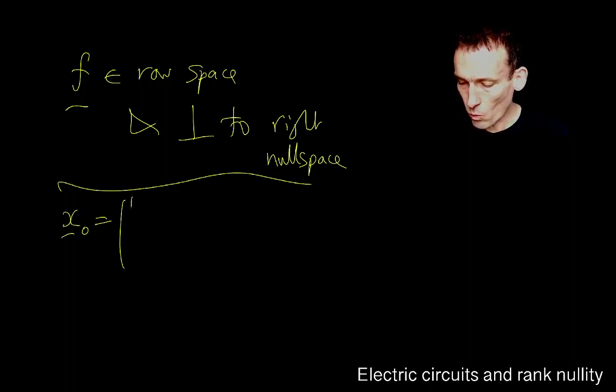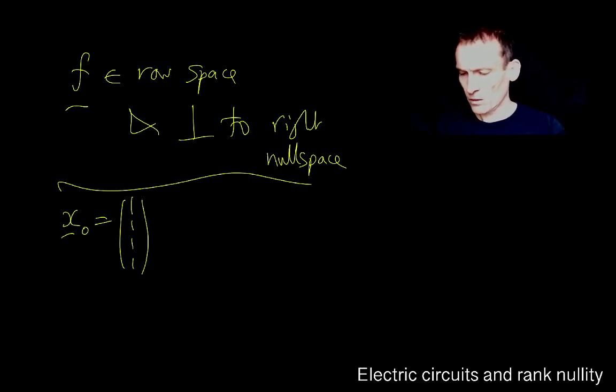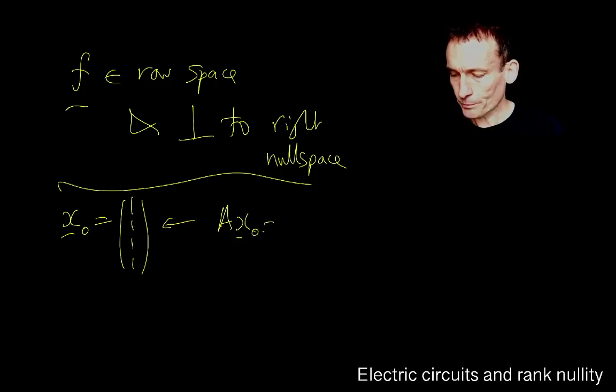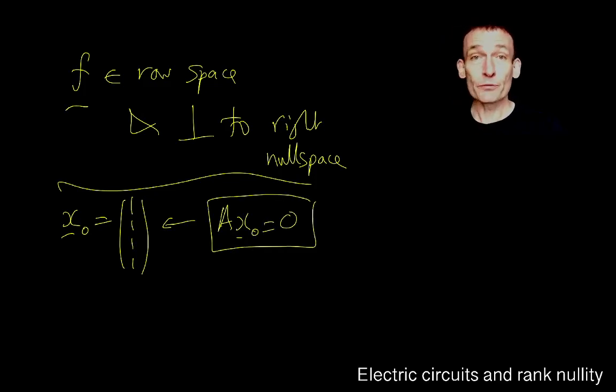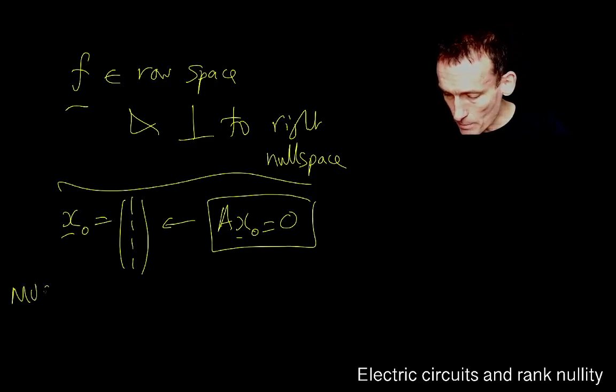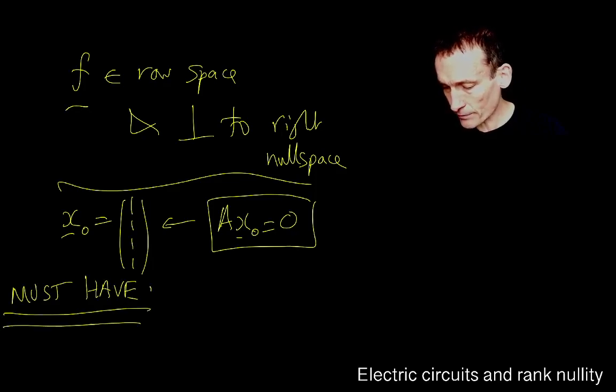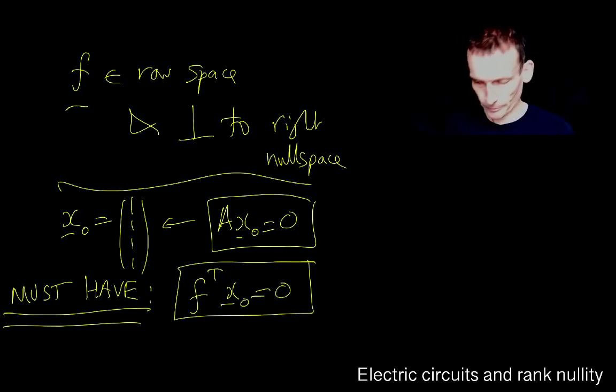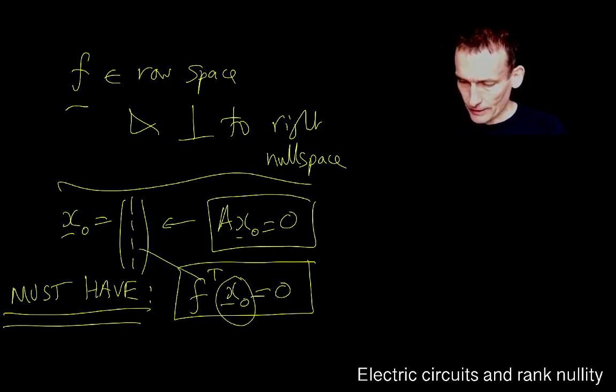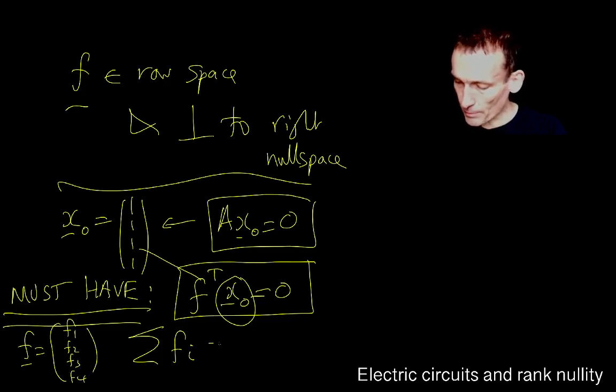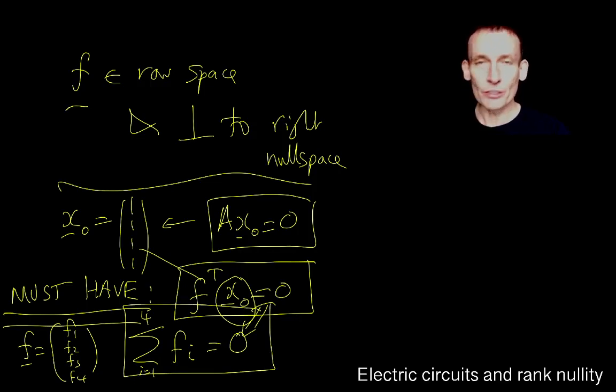This is useful information because we know, do you remember this vector here? 1, 1, 1, 1. I think that dates back to lecture 1. This satisfies this. It's in the right null space of A. So from rank nullity, I already know. I must have, there's no question, I must have f transpose x0 equal to 0. These must be orthogonal in this sense. What it means, of course, these just have 1s everywhere. It means that the sum of the elements of f, if I call f, f1, f2, f3, f4, it means that the sum from i is equal to 1 to 4 must be 0. That's what this means. So I need this constraint to hold if I'm going to find anything consistent.